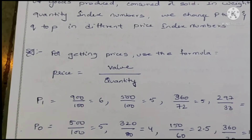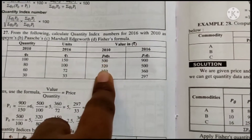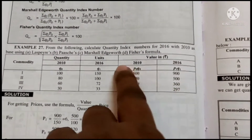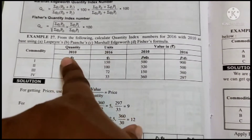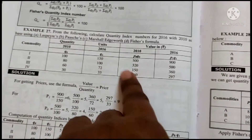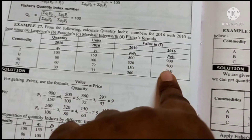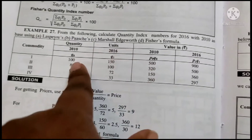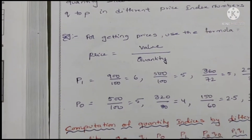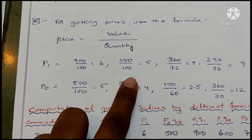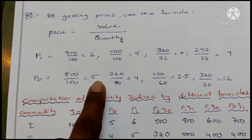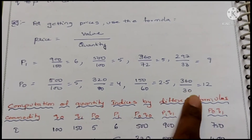For 2010 values: 500, 320, 150, 360 are given. Dividing by quantities: 900÷150=6, 500÷100=5, 360÷72=5, 297÷33=9, giving us P0 values. For P1: 500÷105, 320÷84, 150÷62.5, 360÷30=12. So we derive all required prices from the given value data.